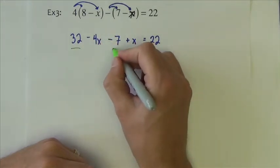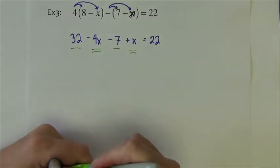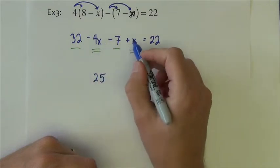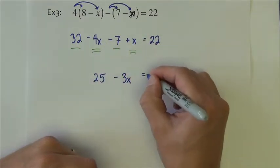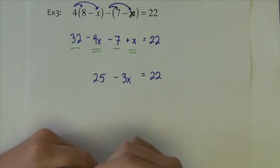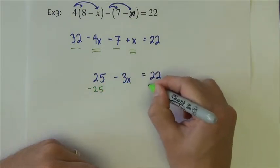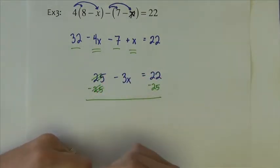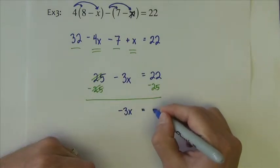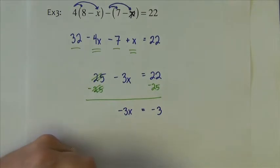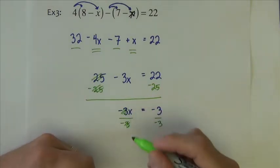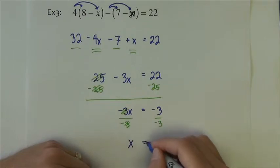On the left-hand side, I'm going to add like terms together. So don't do opposite signs or anything like that. Just put them together as they are. 32 minus 7 is 25. Negative 4x plus x is minus 3x equals 22. And now I can take the 25 and subtract it to the opposite side of the equal sign, leaving us with negative 3x equals negative 3. We'll divide both sides by the negative 3, giving us x equals 1.